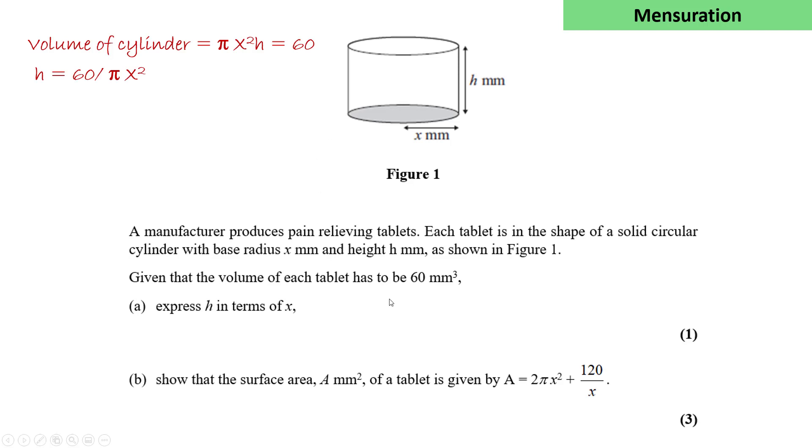Then we have to get an expression for the surface area of the tablet. So here the area is 2πx², so that's the top and the bottom circles, plus 2πxh. That's the curved surface of the cylinder.